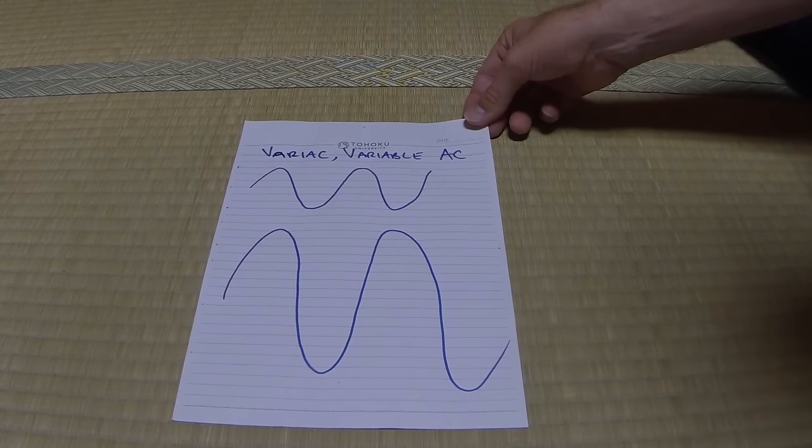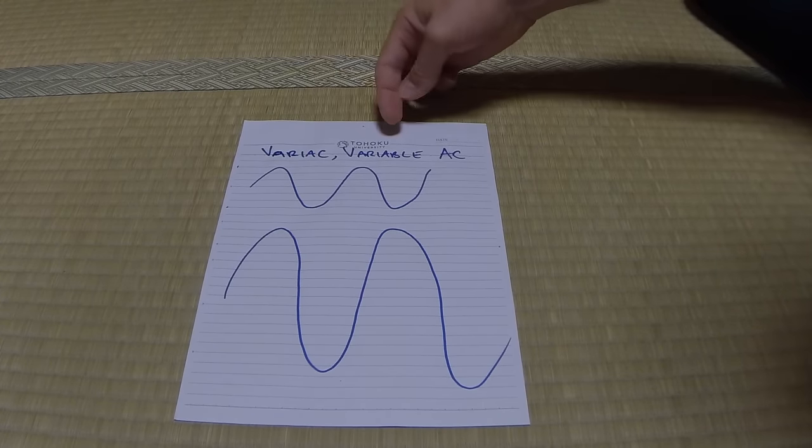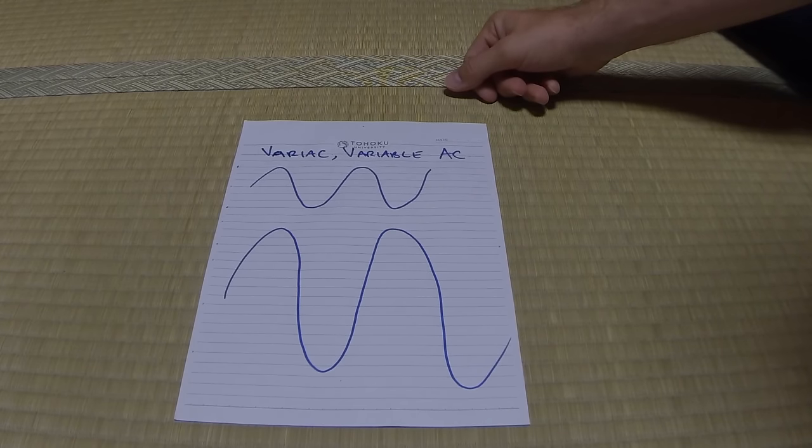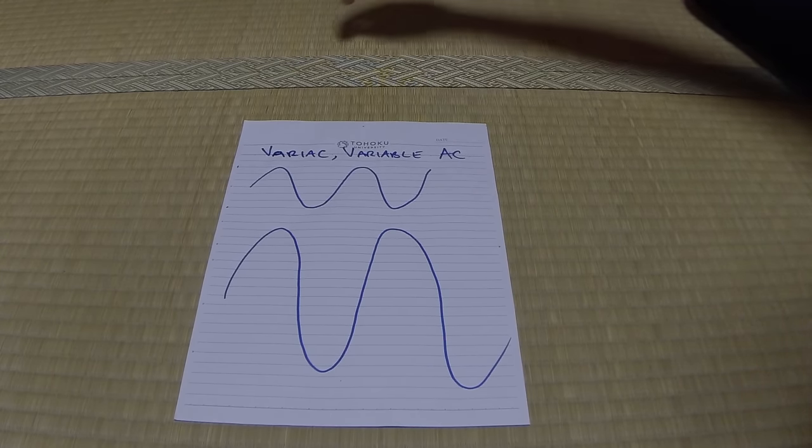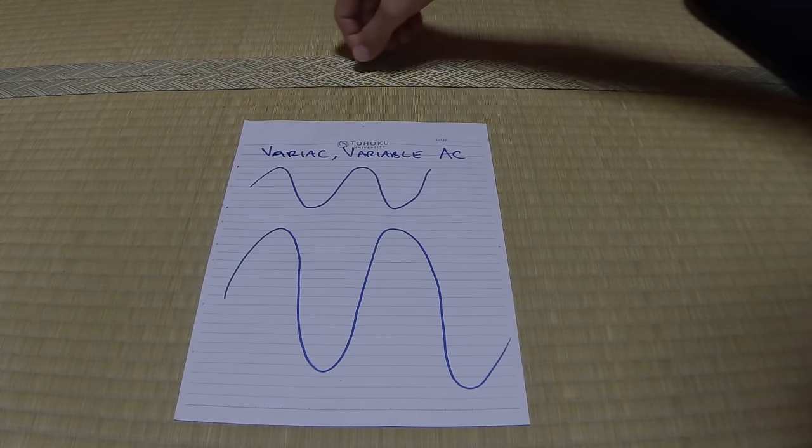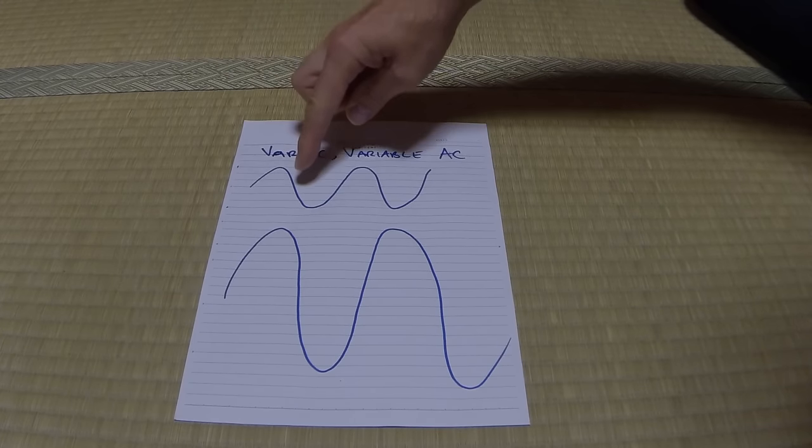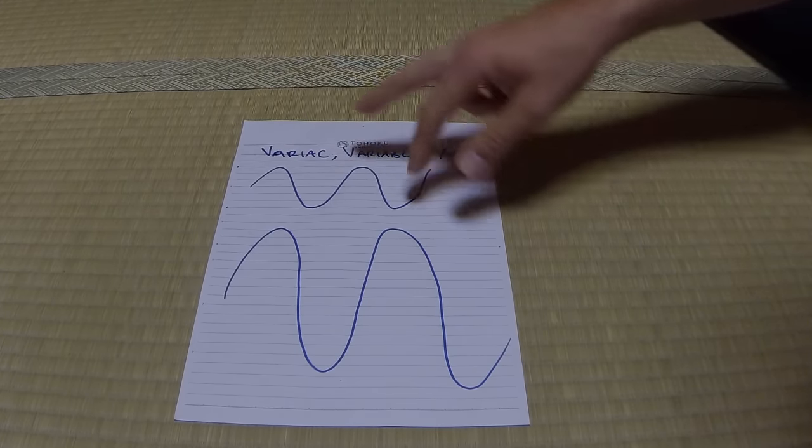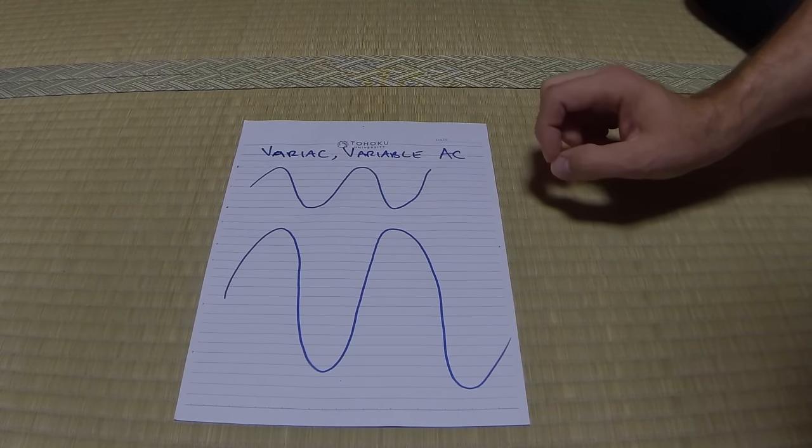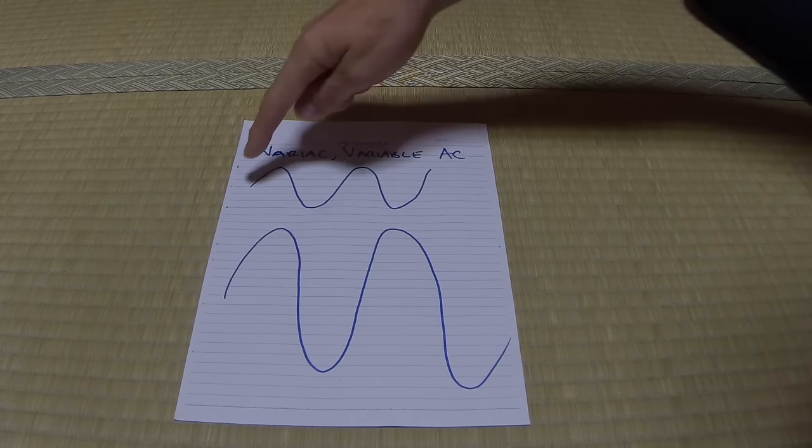Here we have one of the options is to use a Variac, which is a variable AC transformer. What this allows you to do is to take your AC from the mains and, through a series of windings and positions on those windings, vary the plus and negative voltage, effectively, of your AC waveform.